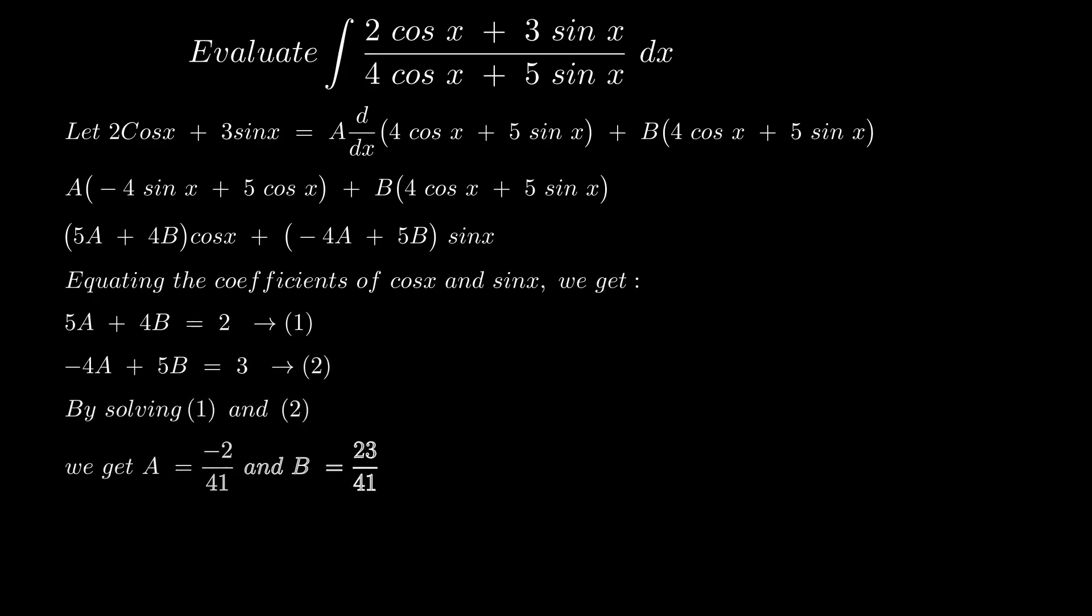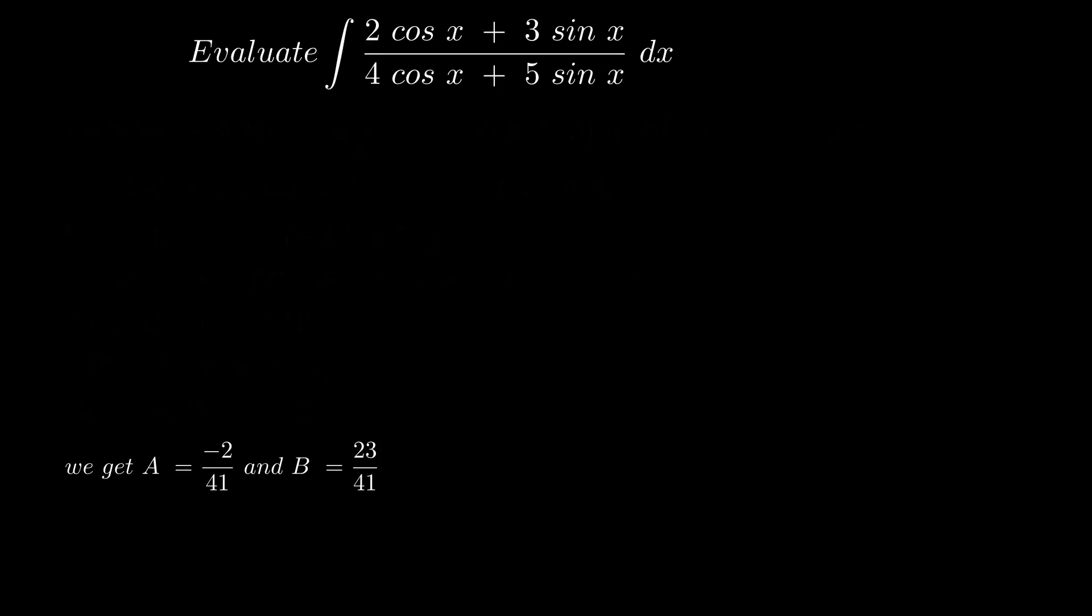By equating the coefficients of cos x and sin x, we get 5A plus 4B equal to 2 and minus 4A plus 5B equal to 3. Solving these both will give us A equal to minus 2 by 41 and B equal to 23 by 41.